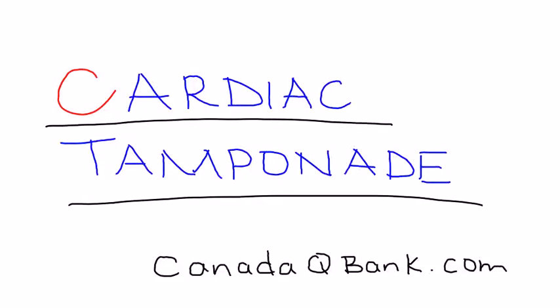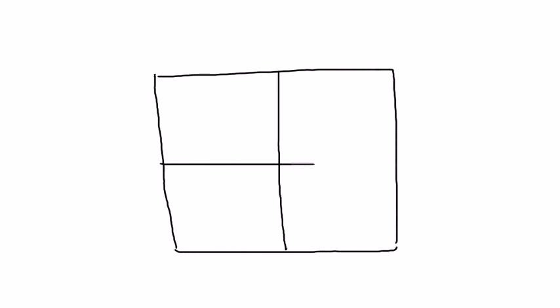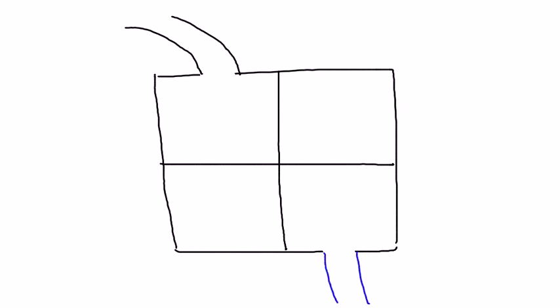Cardiac tamponade is the topic, and cardiac tamponade is an emergency situation. I'm going to illustrate this with a simple diagram. The heart doesn't look like this, but it's good to draw it in a way people can understand. So let's label this: left ventricle, left atrium, right ventricle, right atrium.